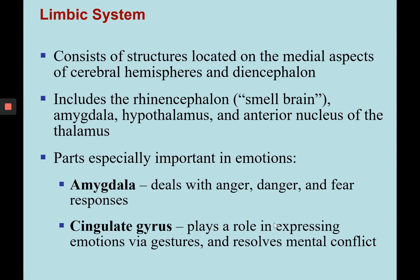The limbic system consists of structures located in the medial aspects of the cerebral hemispheres and the diencephalon, some you've seen before, such as the hypothalamus or the amygdala. The amygdala is also associated with the rhinencephalon, known as your smell brain. It's much more evolved in the human brain than in primates like monkeys, but it is the primitive smell brain. The anterior nucleus of the thalamus is also a part of the limbic system.